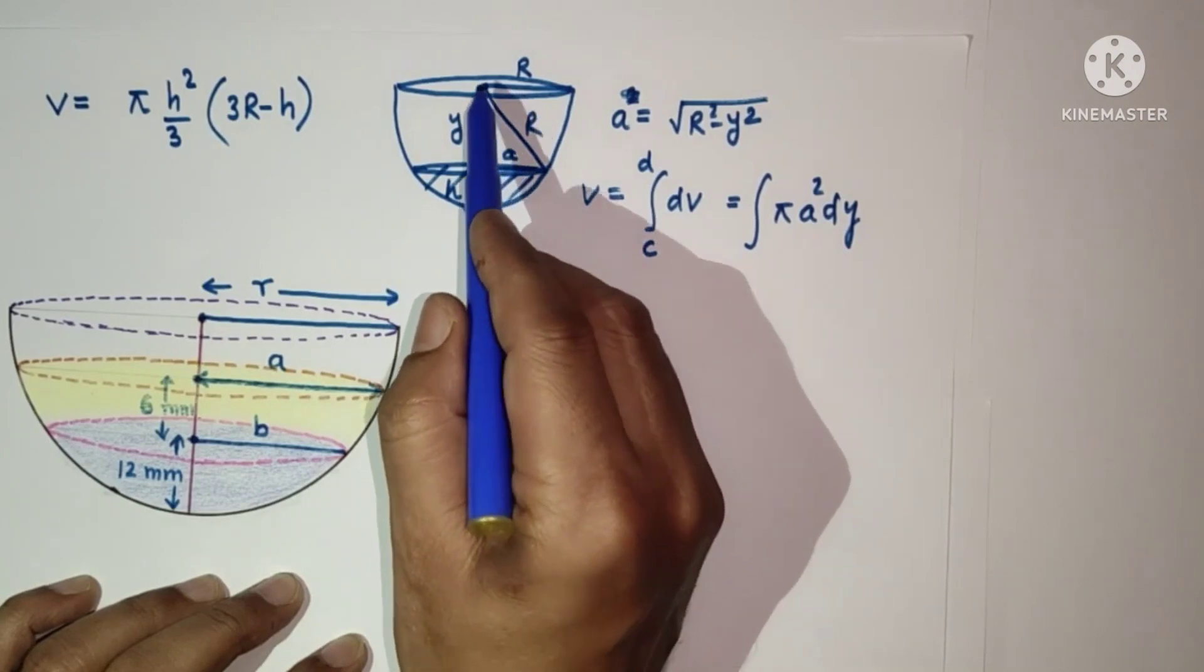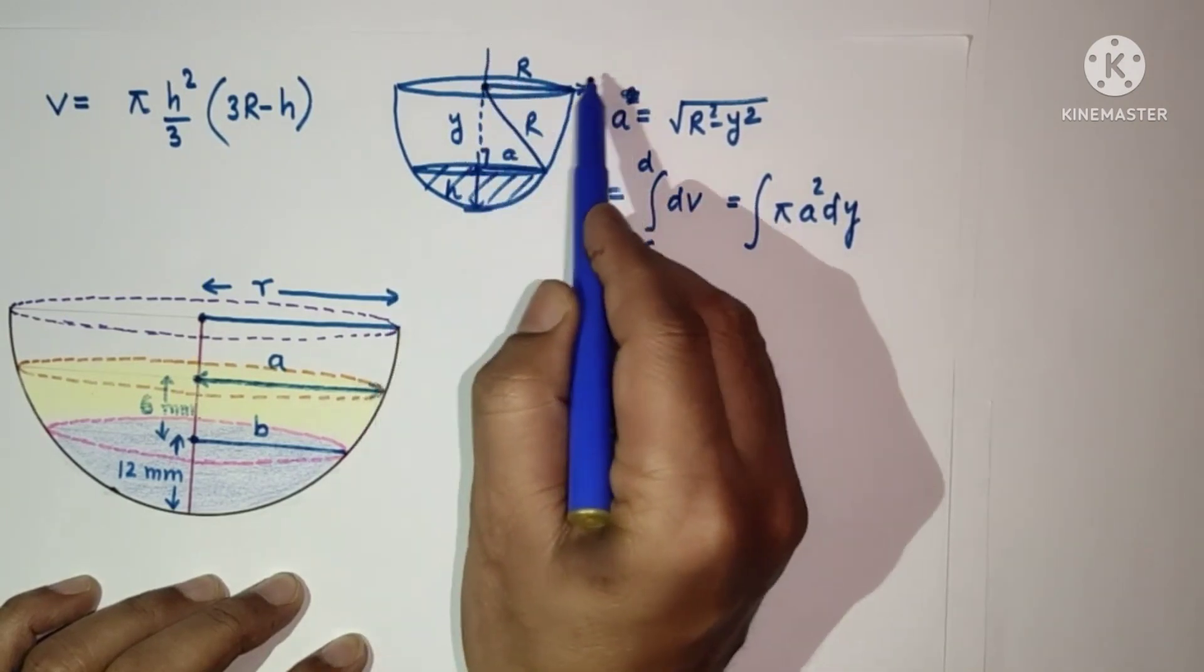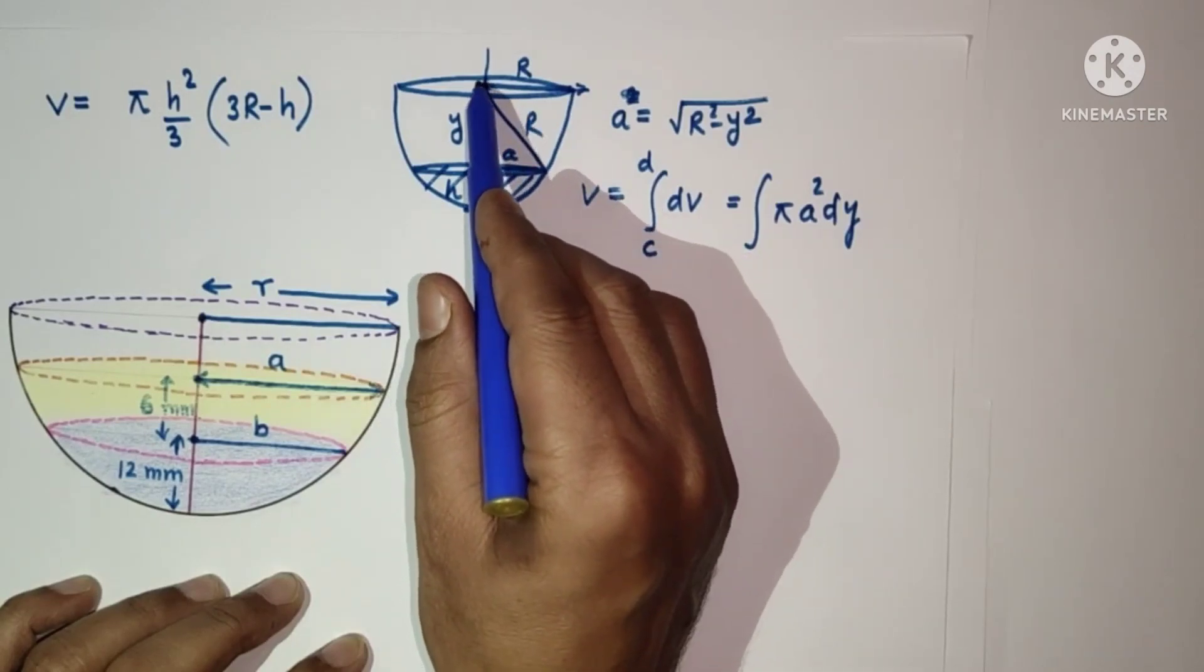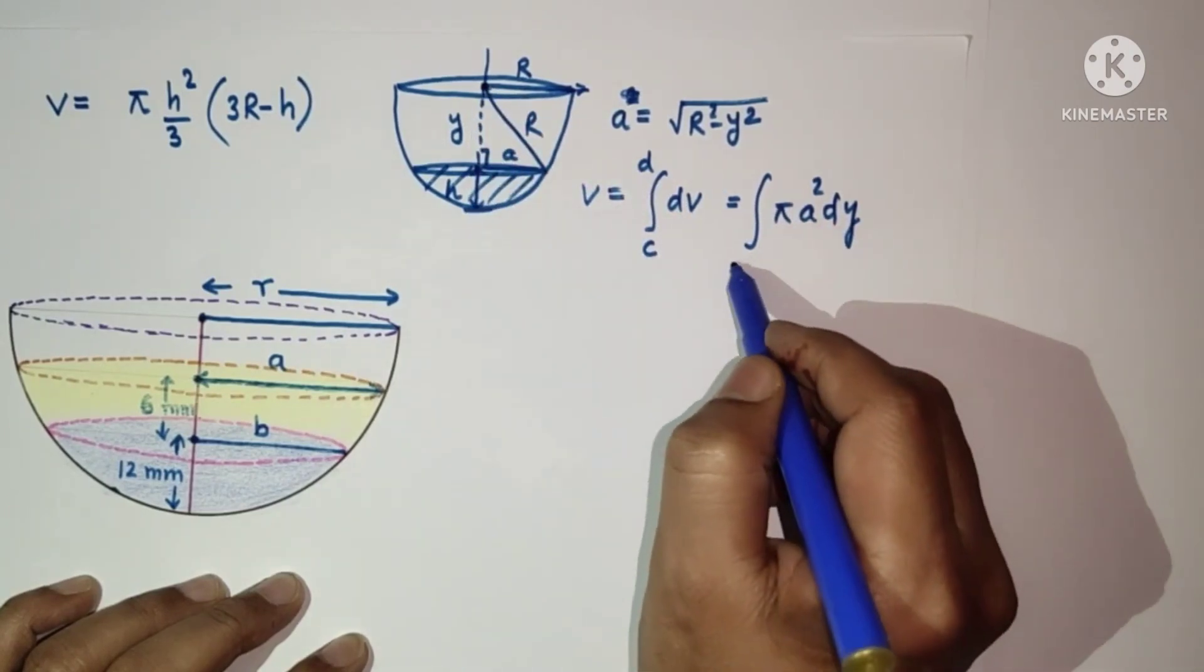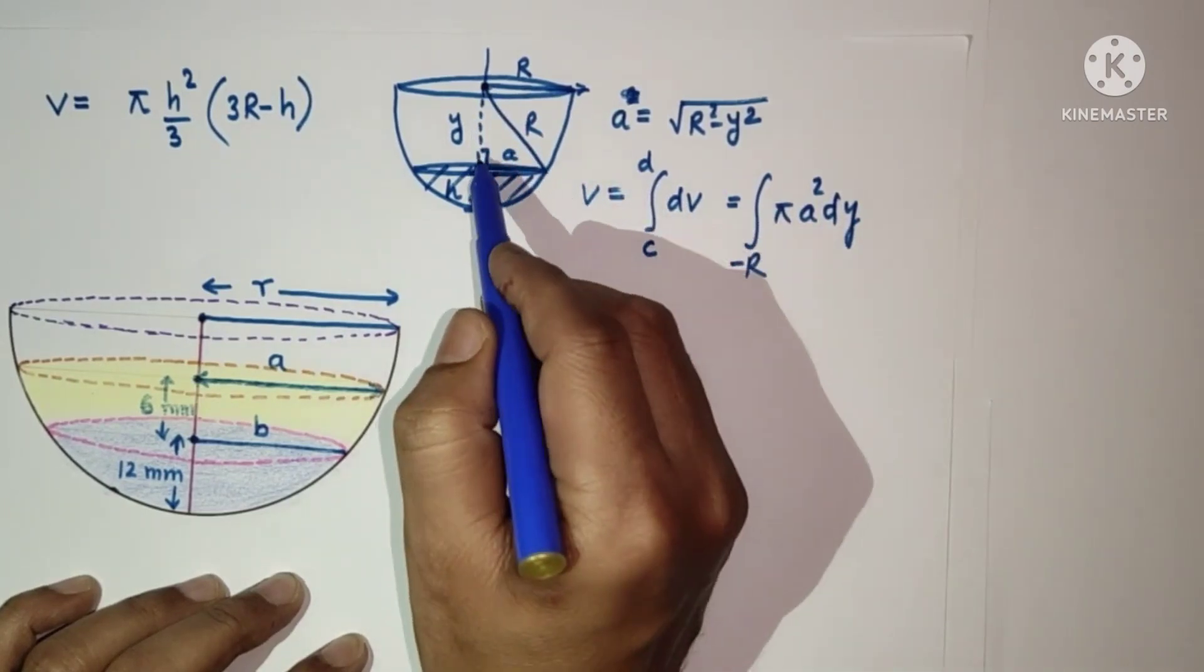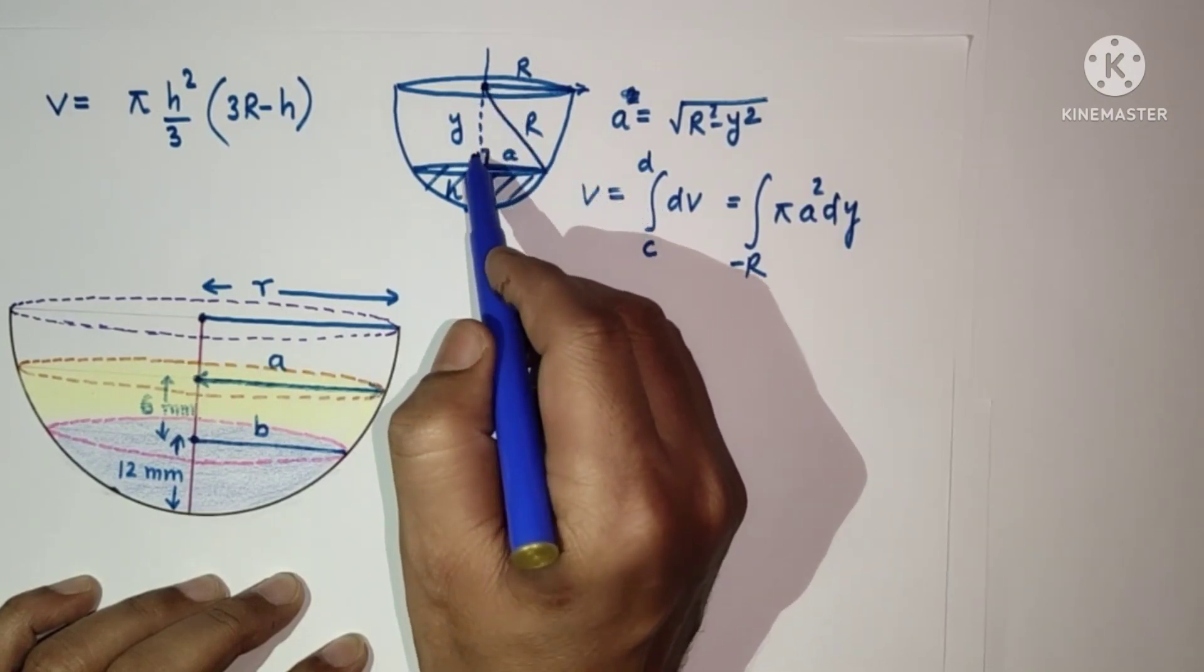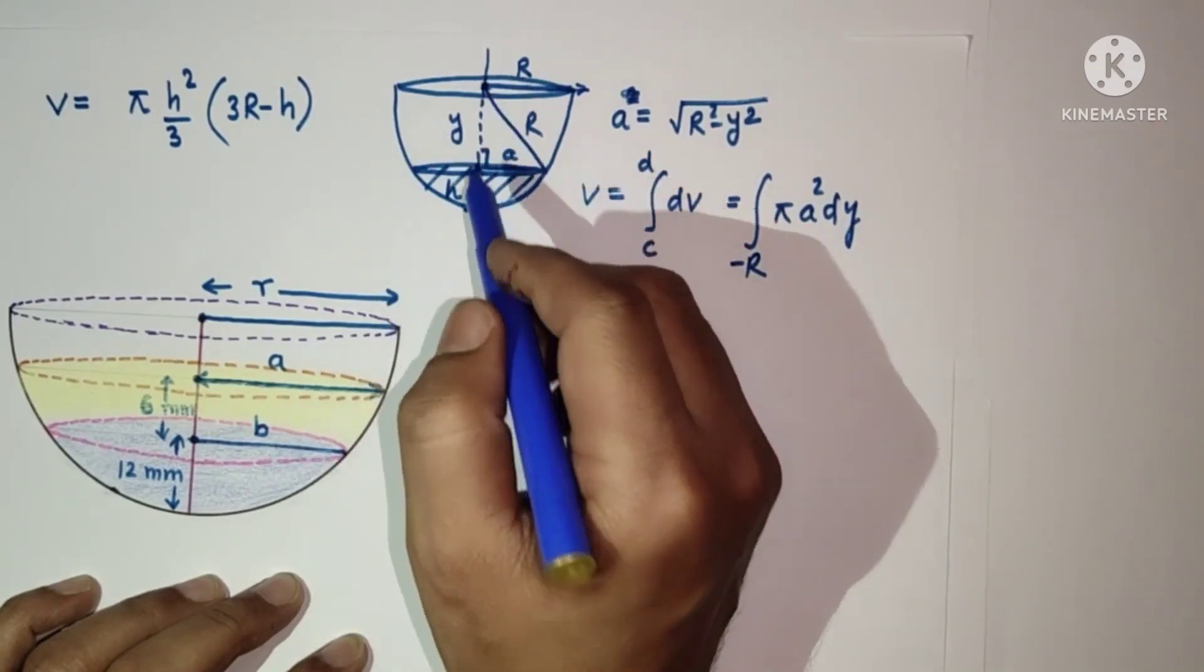For the limits: this is the X axis and this is the Y axis, so this is the origin. Downward it is R, so minus R to this point, which is H height above, so minus R plus H.